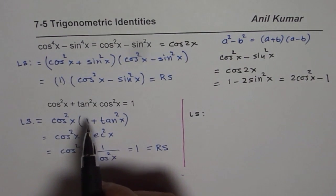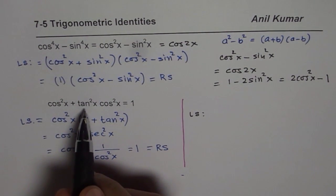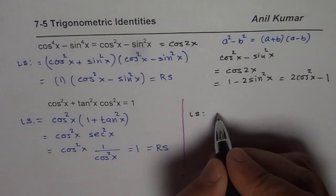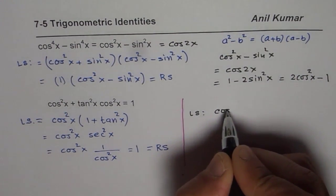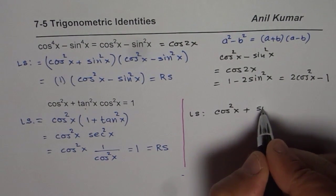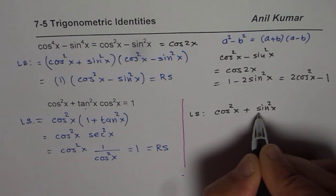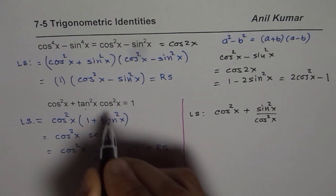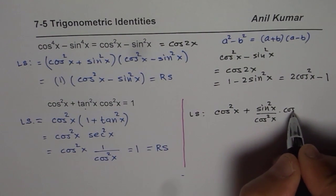Let's again begin with left side. And the alternate method is always write tan as ratio of sine and cosine. So what do we get? We get cos square x plus I am writing tan as sine square x divided by cos square x, then we have here cos square x.